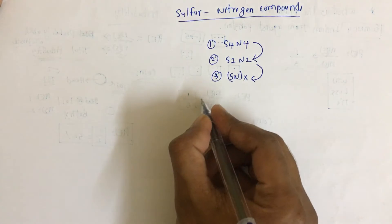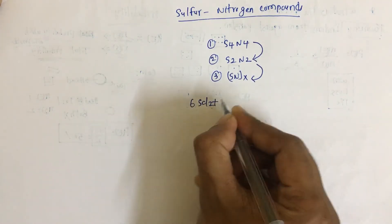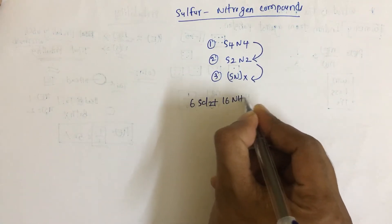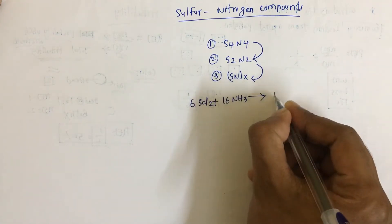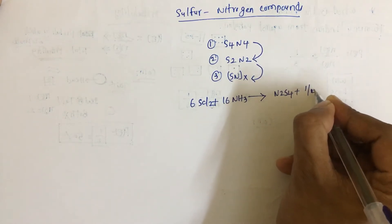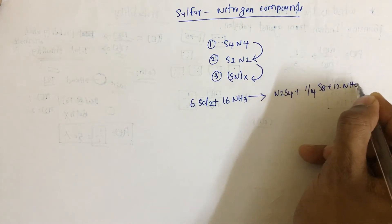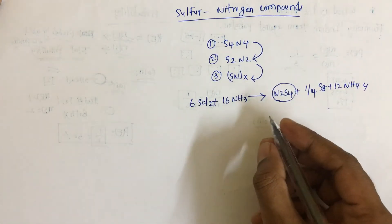Initially we have SCl2. Six moles of SCl2 treated with 16 moles of ammonia will get N2S4 plus 1/4 S8 plus 12 NH4Cl. This N2S4 is not stable, so this decomposes into N2S2.